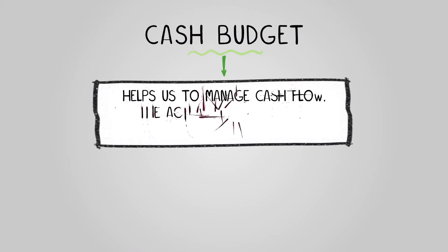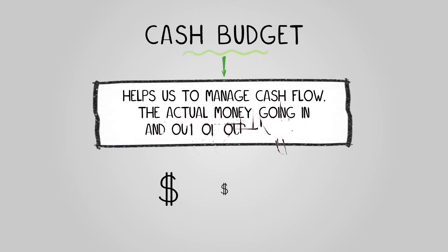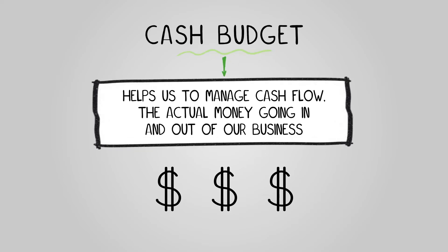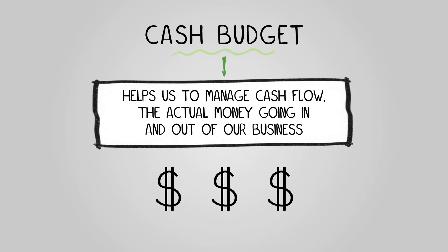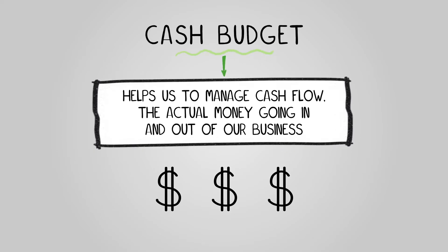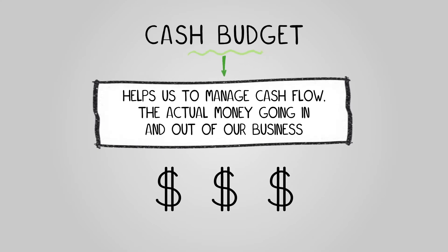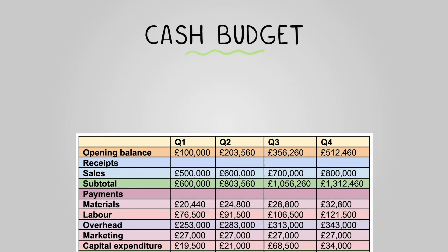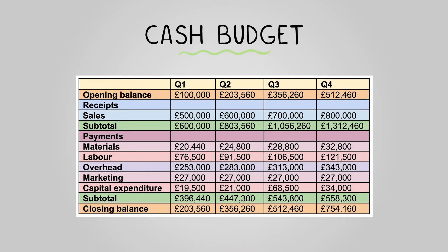The final budget we'll look at is the cash budget. This helps us to manage cash flow — the actual money going in and out of our business — so that we don't run out of it and can put actions in place if we're going to. The cash budget can typically include information like: